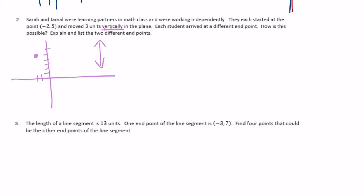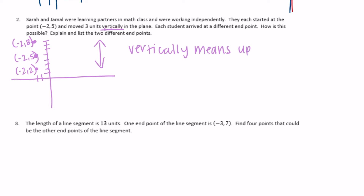Let's say Sarah decides to go three units up — I'm going to plot three more points. She might end up at (-2, 8), since that's three more units up. And maybe Jamal went down three units — one, two, three — and ended up right here at (-2, 2). So those are two different points, because vertically just means up or down.